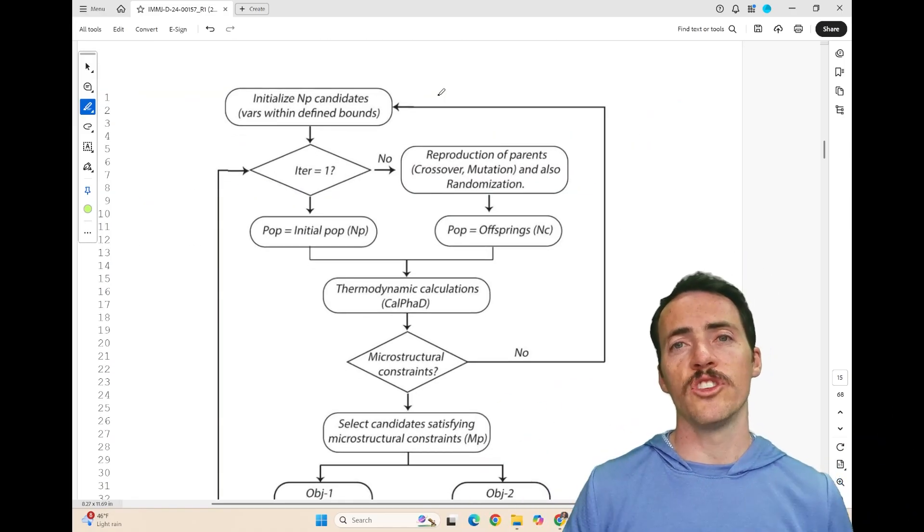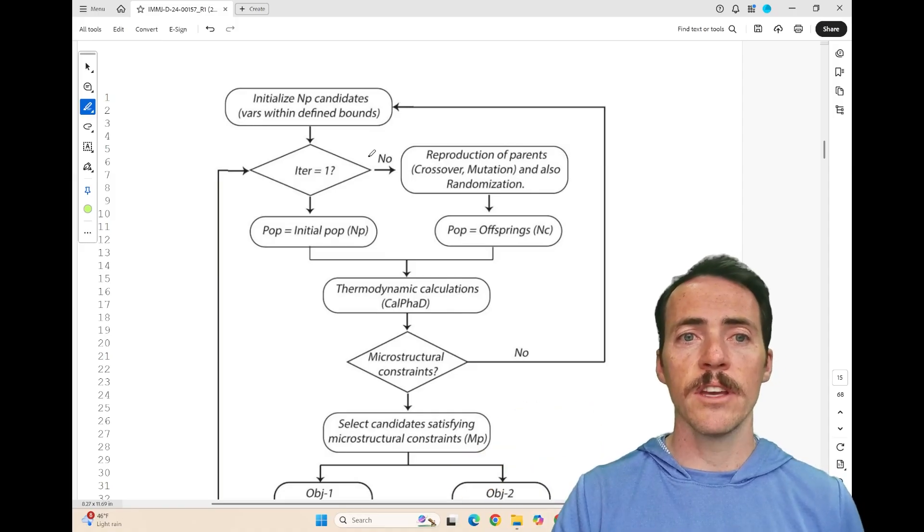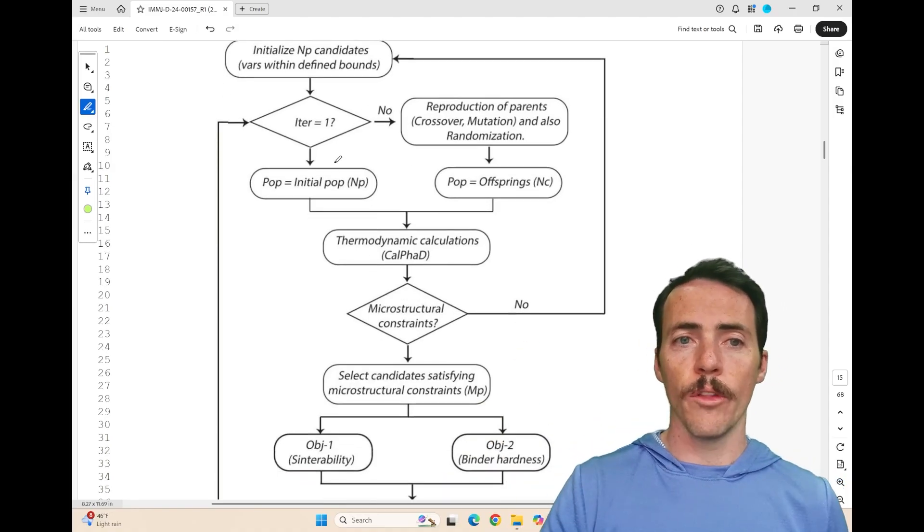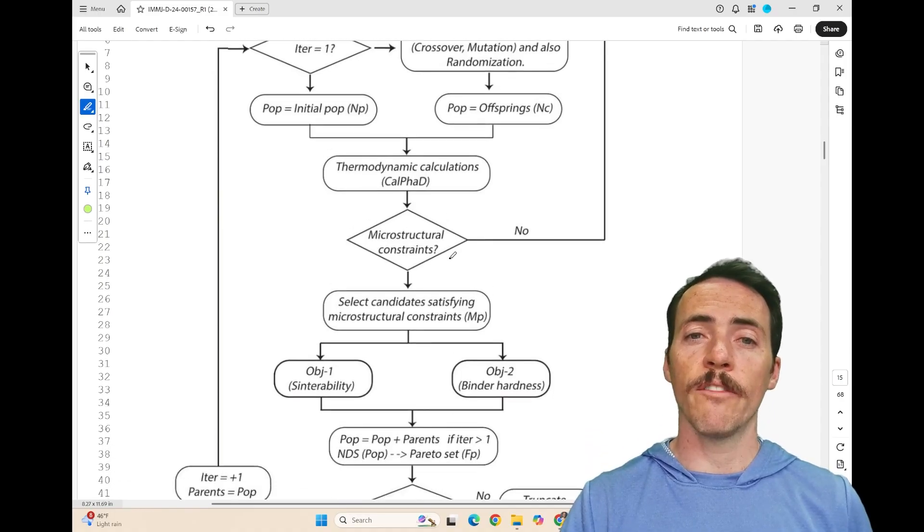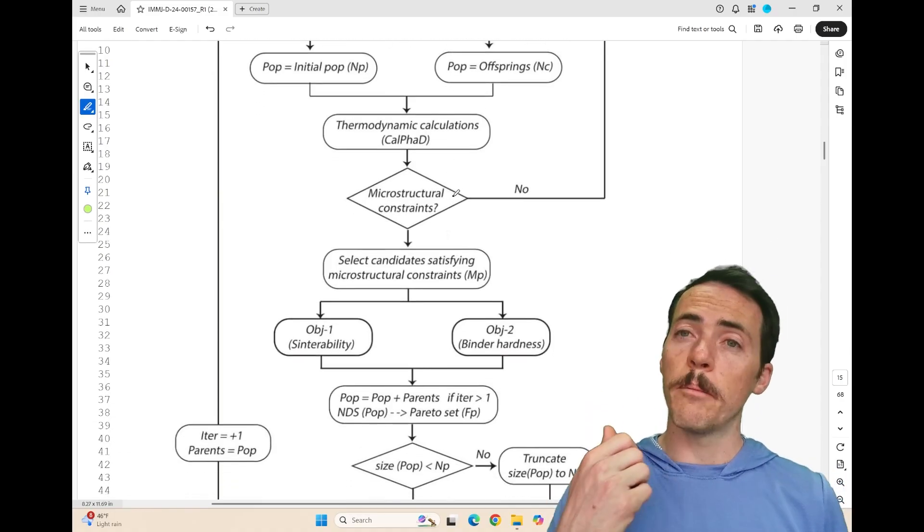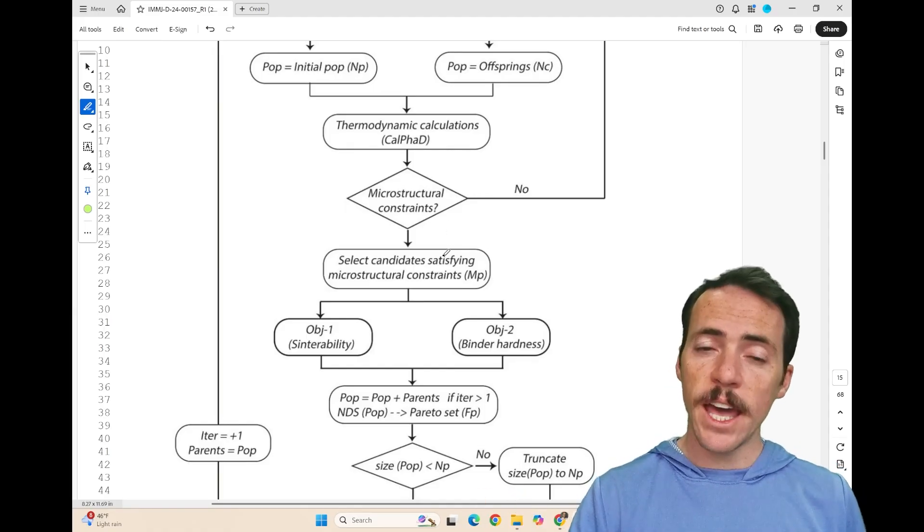If you're not familiar with this genetic algorithm approach, essentially it starts with some initial population of candidates. And on the very first iteration, all they can do is define this as the initial population. They do the Calfad calculations and they ask whether or not the microstructure has the phases that they're interested in, a little bit of a liquid or an austenite phase.